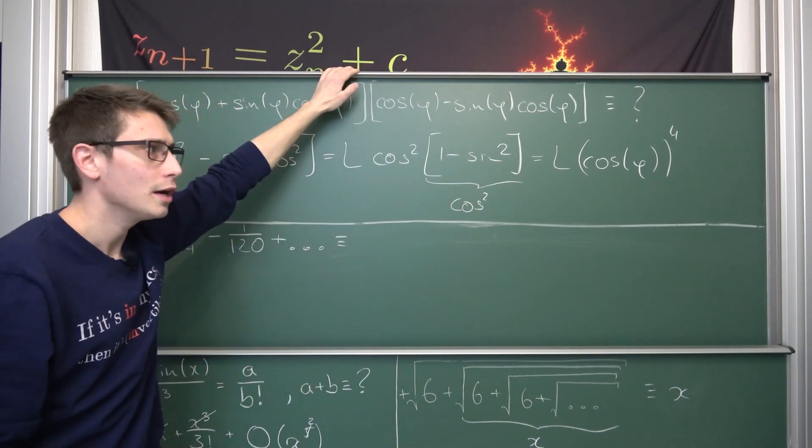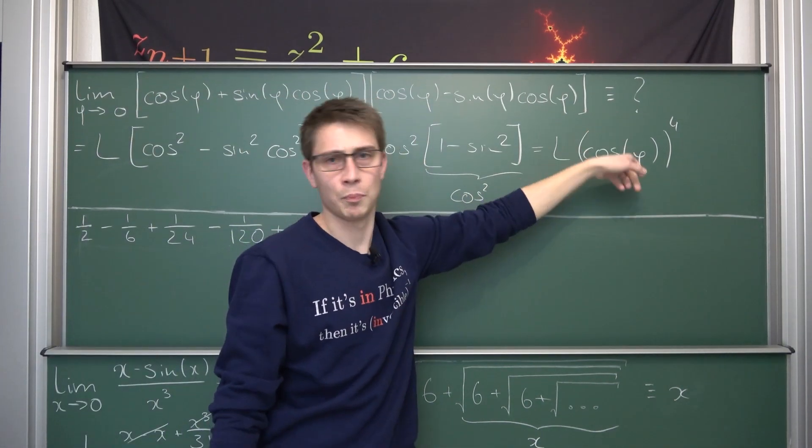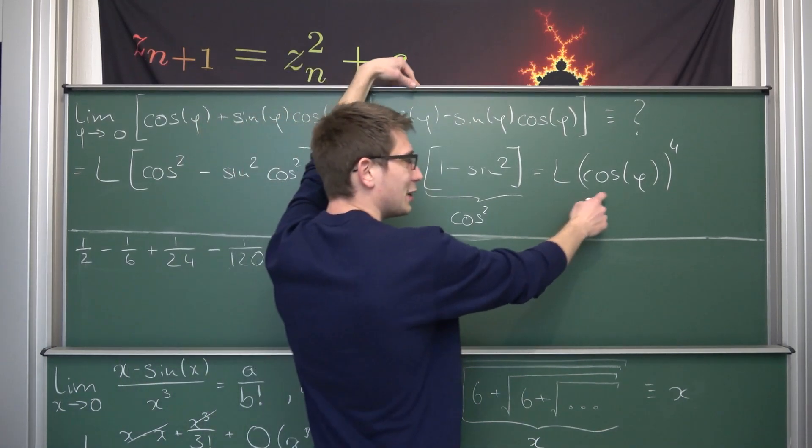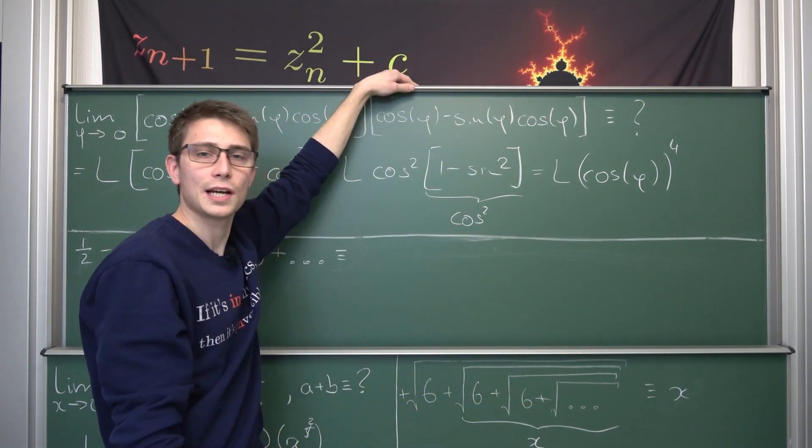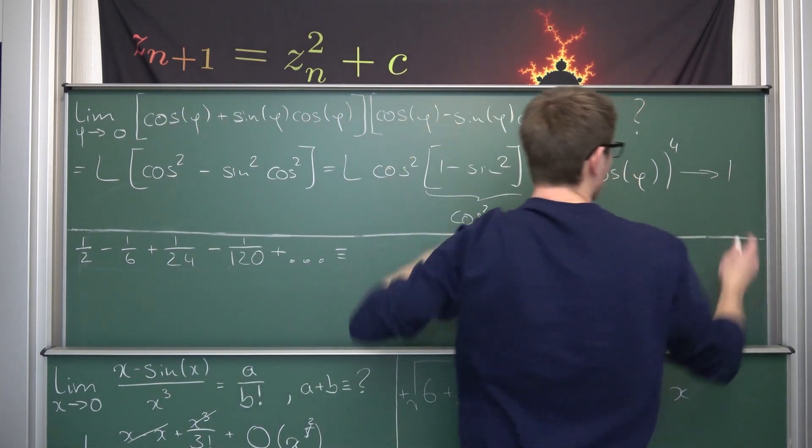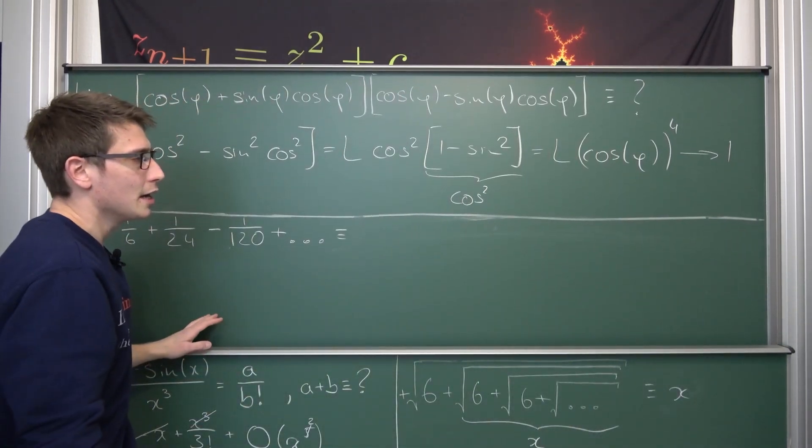So the limit as phi approaches zero of cosine of phi and all of this to the fourth power. And now we are going to notice that polynomials of this kind, or exponentials in general, are also continuous. Meaning we can track the limit to the inside. Cosine of zero is going to evaluate to one. One to the fourth power is going to turn into one in the limit. And that's basically it.